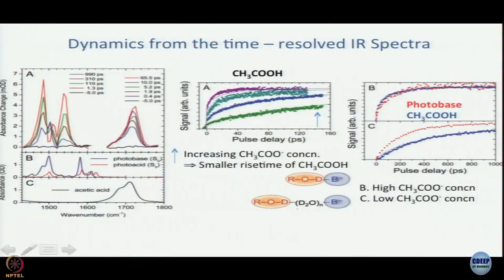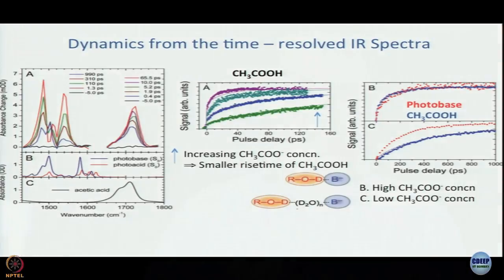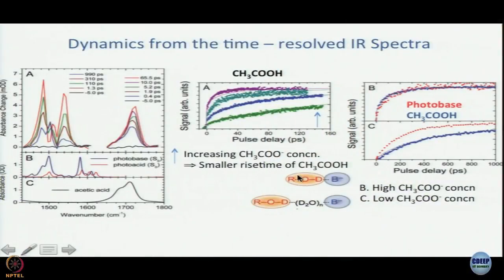What you should see is how the absorption of acetic acid changes as a function of time post-excitation of pyranine photo acid. What do you expect to see? You expect to see a rise time. They looked at the rise time, and what they saw is that first of all a rise time is there. Secondly, you see a smaller rise time if you increase the concentration of acetate ion. Why? Because if you have a higher concentration of acetate ion, then when this deuterium ion is liberated, it finds an acetate ion faster. That is why the rise time is shorter as you increase the CH₃CO⁻ concentration.